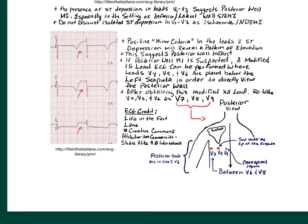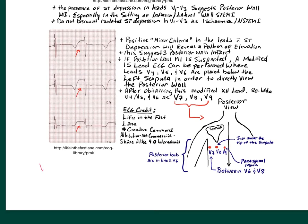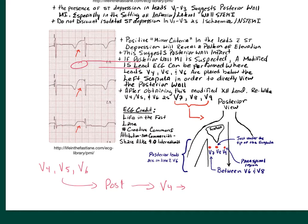To obtain a modified 15-lead ECG, we take V4, V5, and V6 and move them over to the posterior wall. V4 will become V7, V5 will become V8, and V6 will become V9.